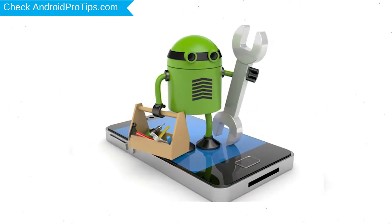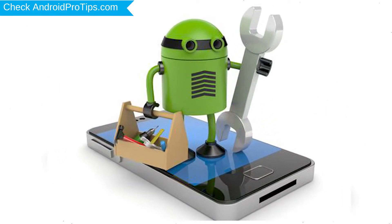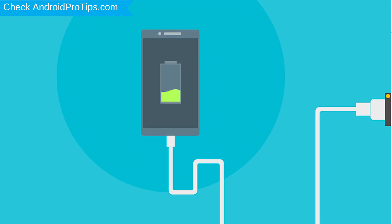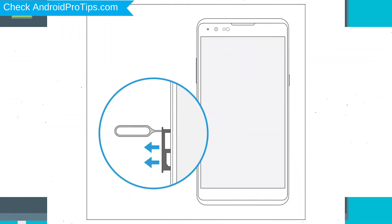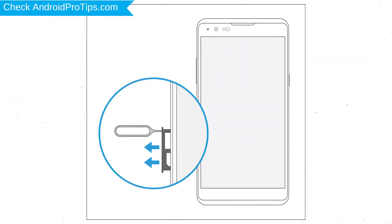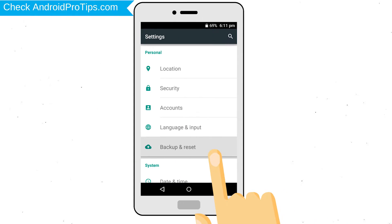Before resetting your mobile, your mobile battery must be above 50%. Remove SD cards and SIMs. Back up your Android mobile data if possible.